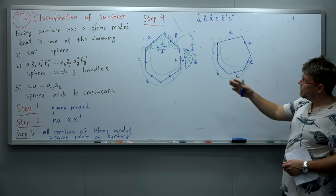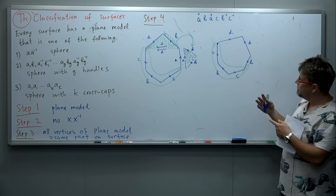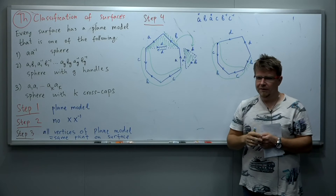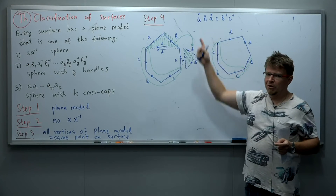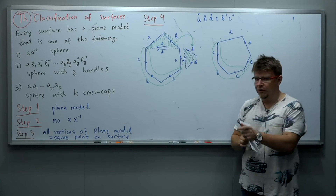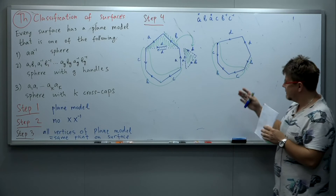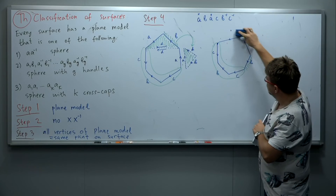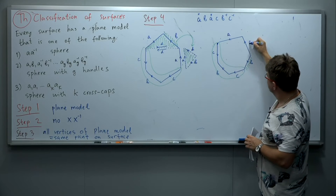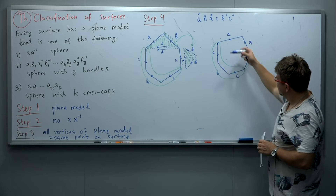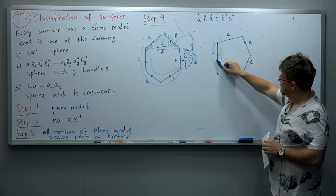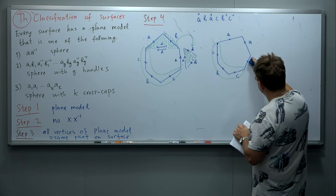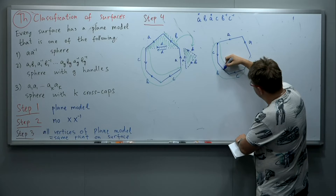We can continue. Notice that this part of the original plane model is untouched, while this part is now flipped — because when we remove the D triangle and glue it back, we turn it over. This is why B points in the counterclockwise direction here and in the clockwise direction there. But notice that we now have two copies of B pointing in the same direction — strictly speaking B inverse and B inverse — so let's reverse the direction so it becomes B and B. Now we can apply the same operation again.